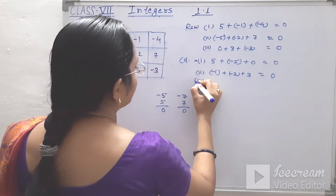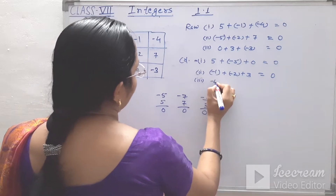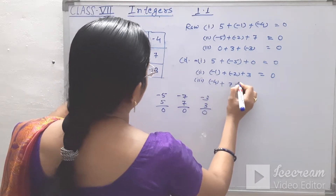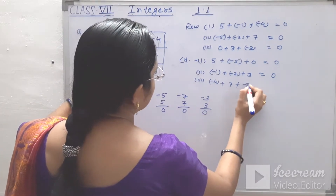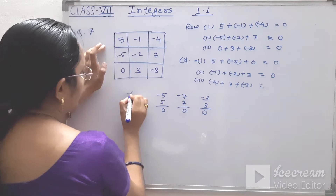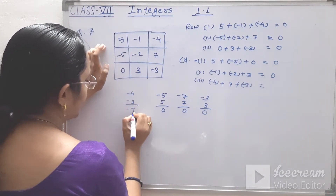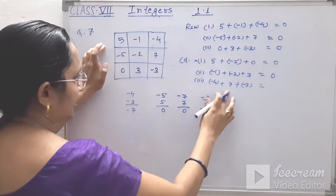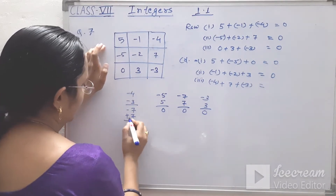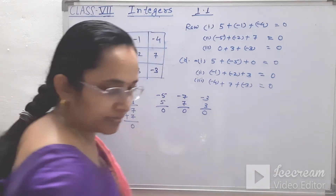Third column: minus 4 and minus 3, answer is minus 7, and plus 7. Plus 7 and minus 7, answer is 0.